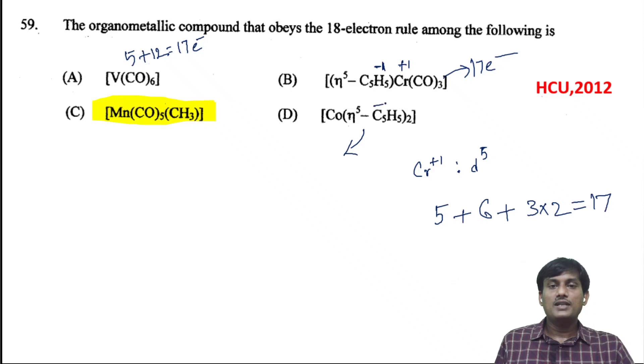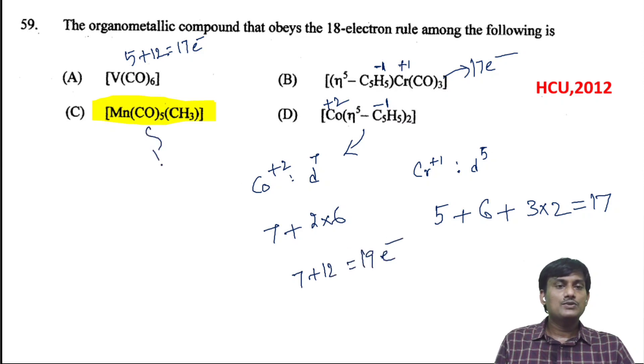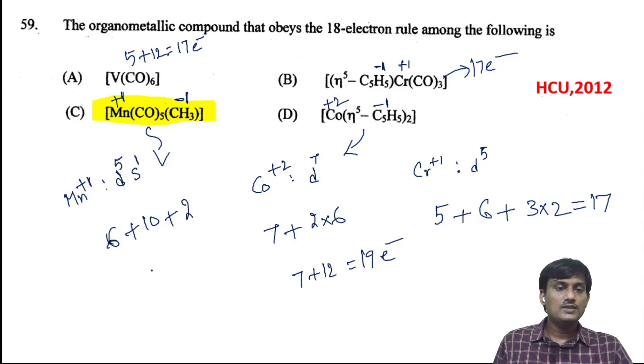Let's check the cobalt complex. Cobalt +2 has d^7 configuration, so 7 electrons. Two C5H5^- ligands donate 2×6=12 electrons, giving 7+12=19 electrons. Now for Mn(CO)5(CH3): CH3 has -1 charge, so Mn is +1. Mn^+ has d^5 s^1 configuration, giving 6 electrons. Five CO groups donate 10 electrons, plus 2 from CH3, giving 6+10+2=18 electrons. This complex follows the 18-electron rule.